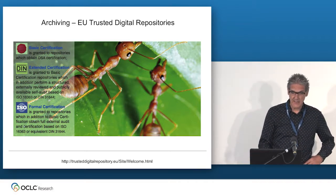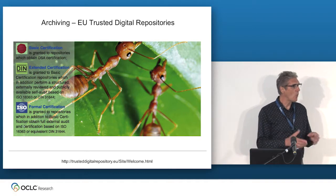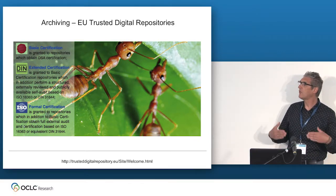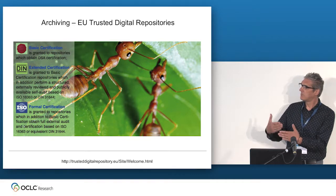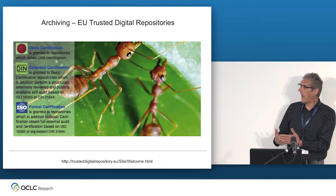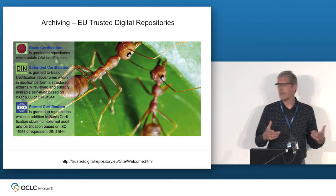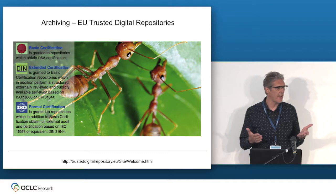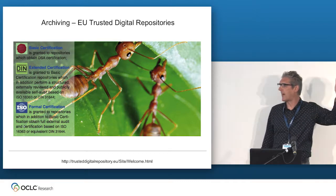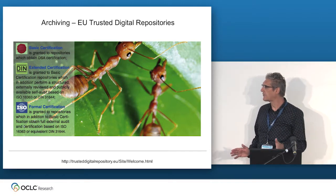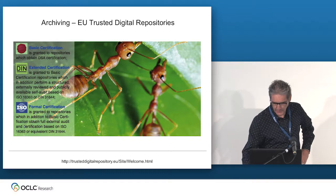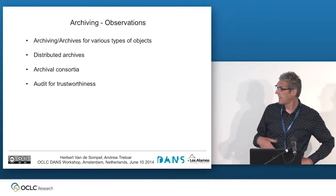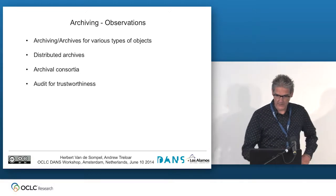With digital archival repositories comes the question of trust and how we figure out whether we trust them. DANS has done pioneering work with the Data Seal of Approval — a low-barrier but important indicator of trustworthiness. There's also DIN certification and ISO certification. The point is that once we have these archives — and they'll be distributed all over the place — it will be extremely important to be able to trust and audit them. For me, audit also means the ability to say: there was this thing on the web with this identifier — do you actually have it? Summary: archiving of various types, distributed consortium, and audit for trustworthiness.